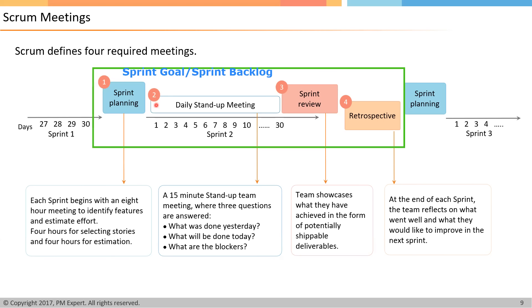Once the plan is ready, the team starts executing the plan and creating the deliverables. The second important meeting that happens every day is the Daily Stand-Up Meeting. The purpose of this daily stand-up meeting is to assess the progress of the team towards the Sprint Goal and adapt if required. This meeting is time-boxed to 15 minutes.